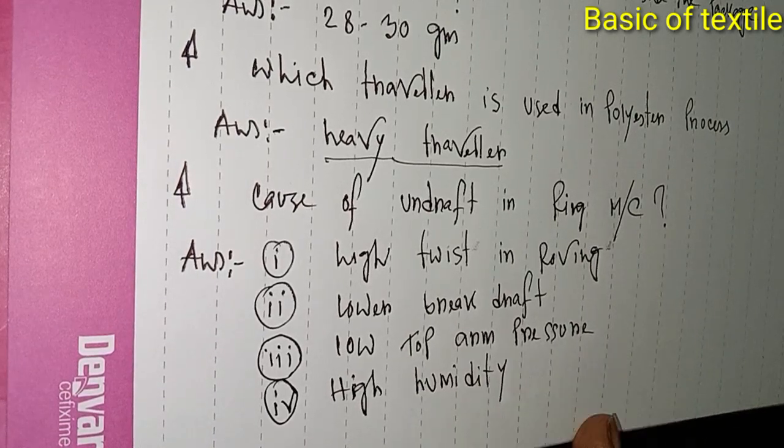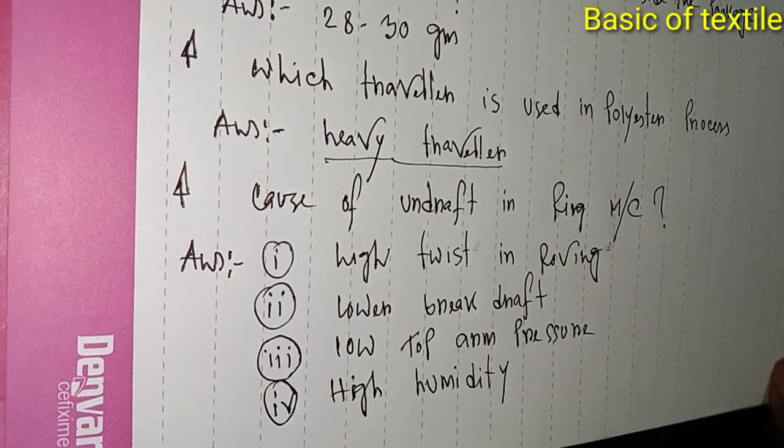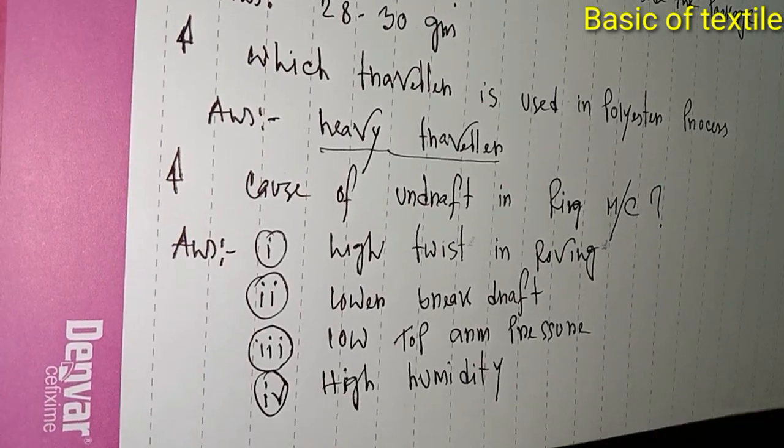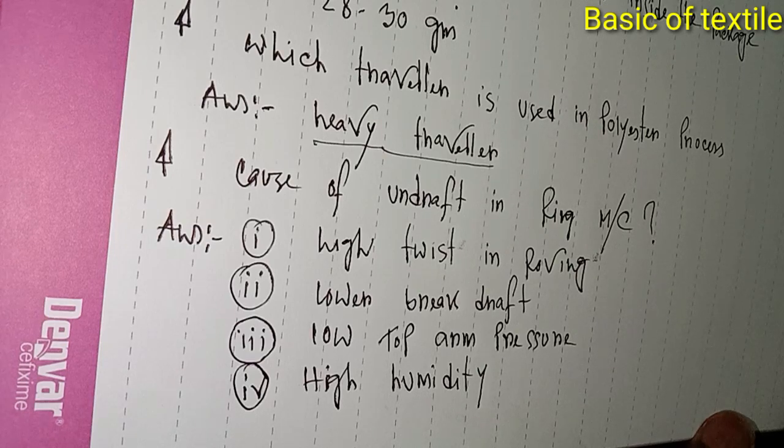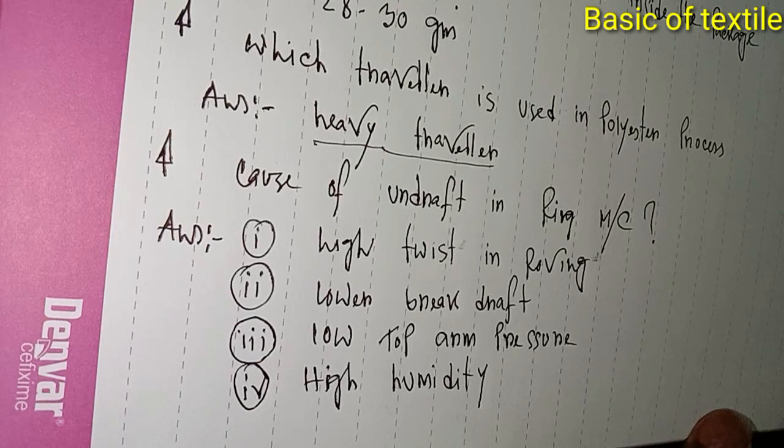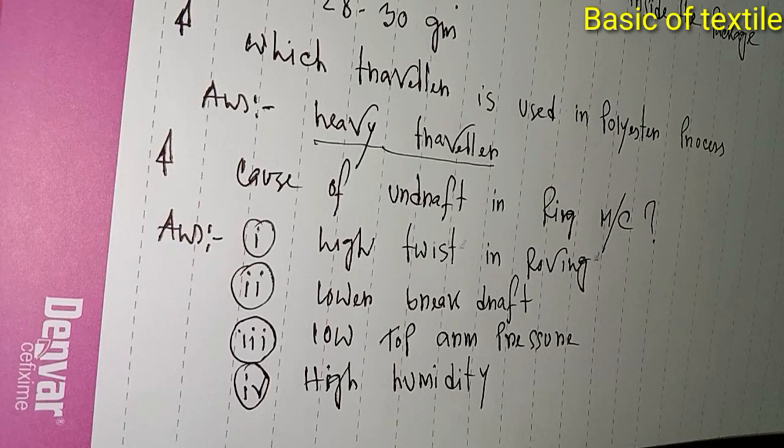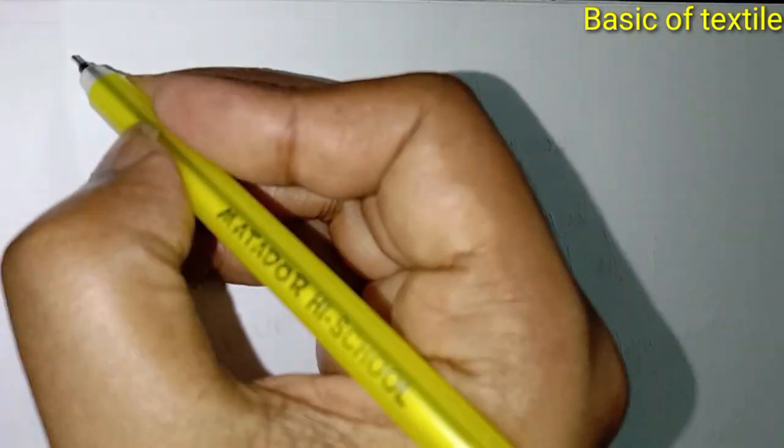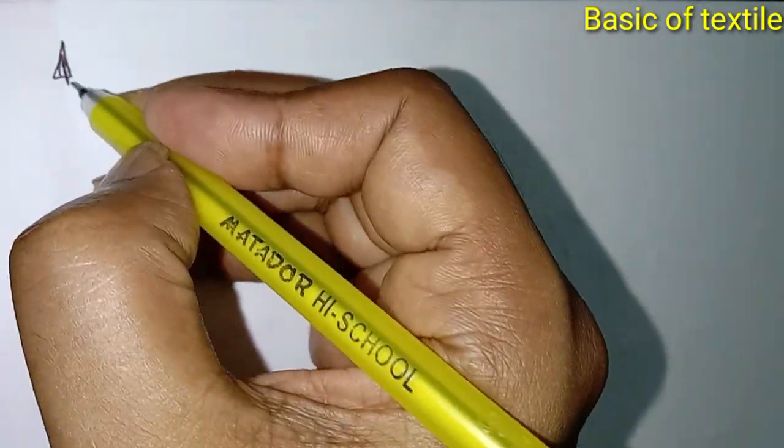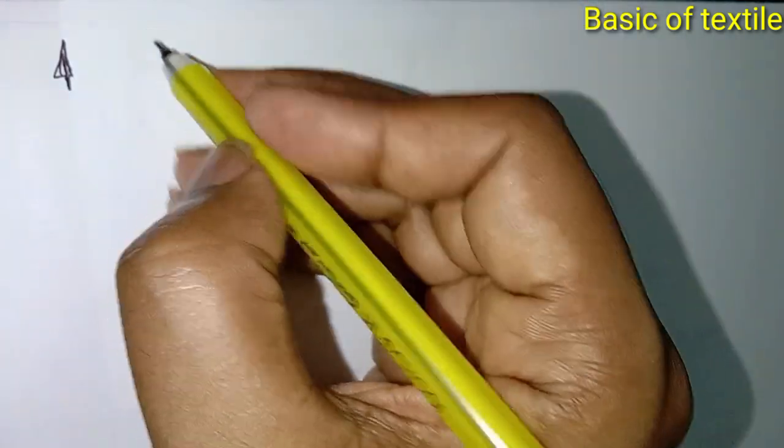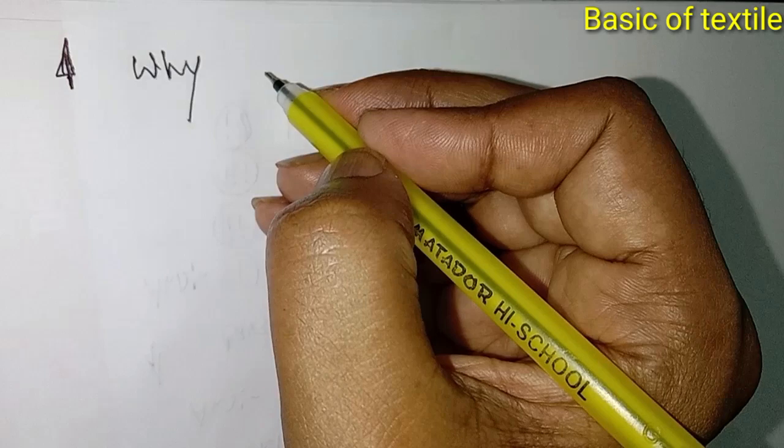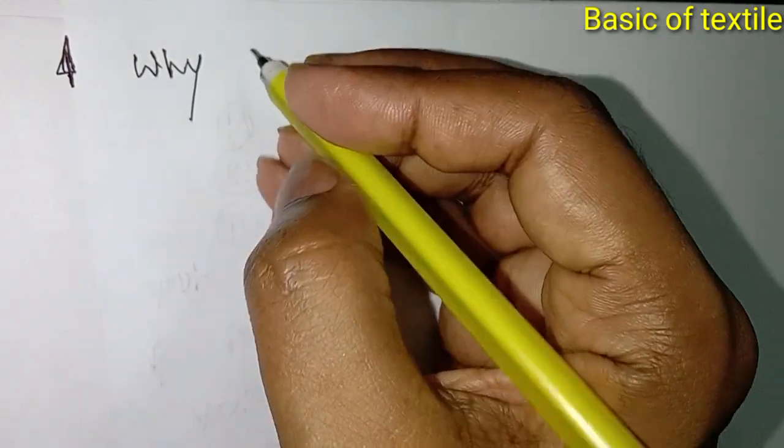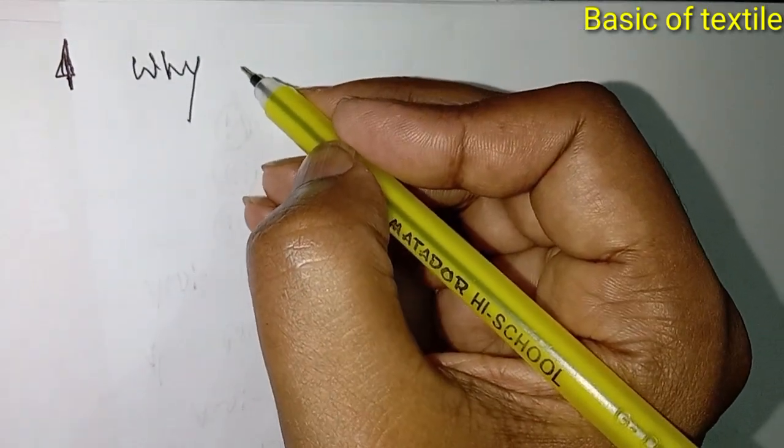Number four is high humidity. When the humidity level is too high compared to the standard temperature and moisture conditions, this also causes undraft problems.